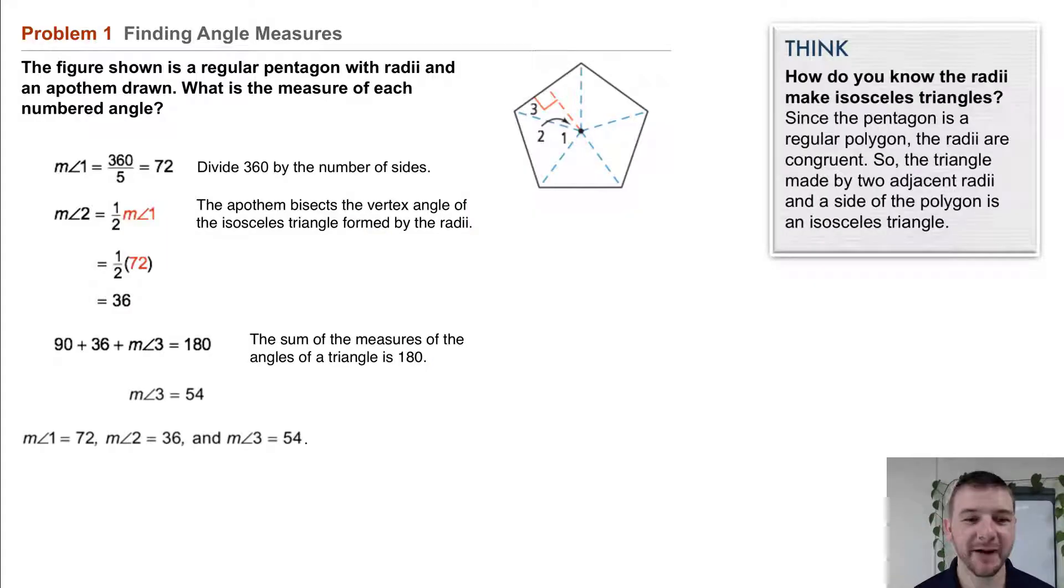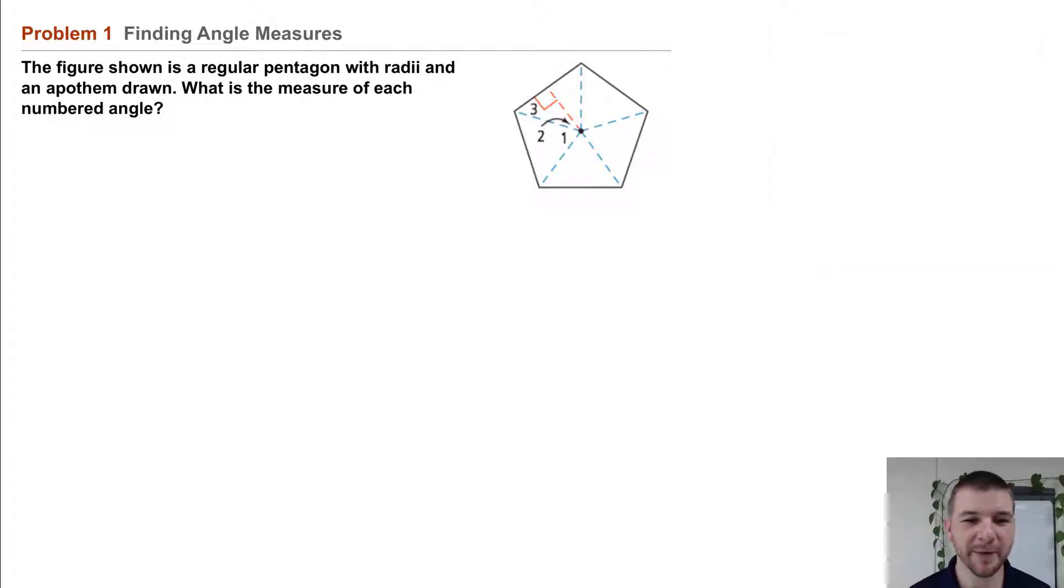Problem 1: Finding angle measures. The figure shown is a regular pentagon with radii and an apothem drawn. What is the measure of each numbered angle?